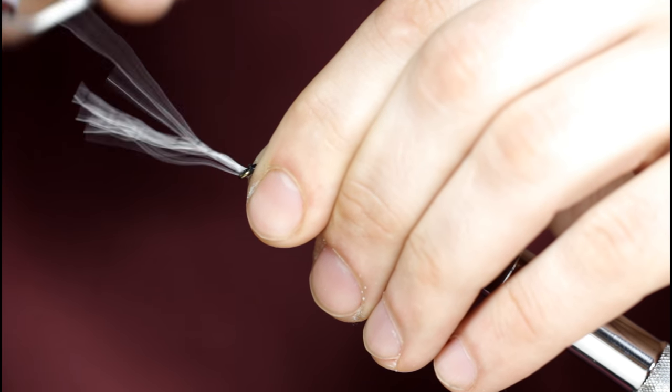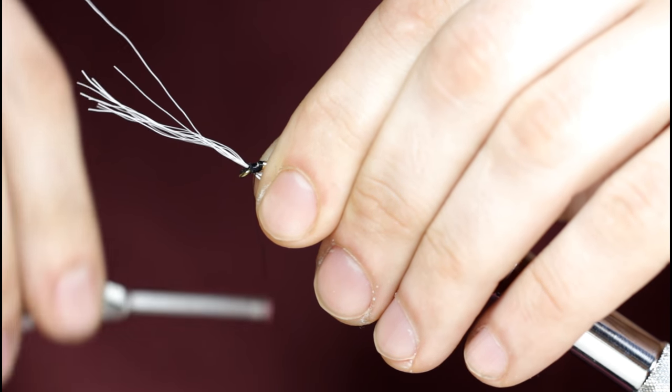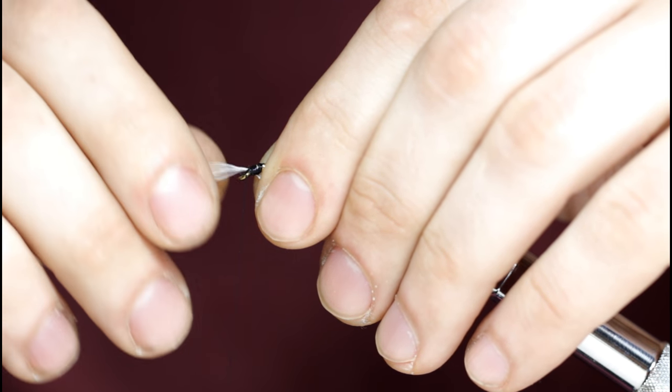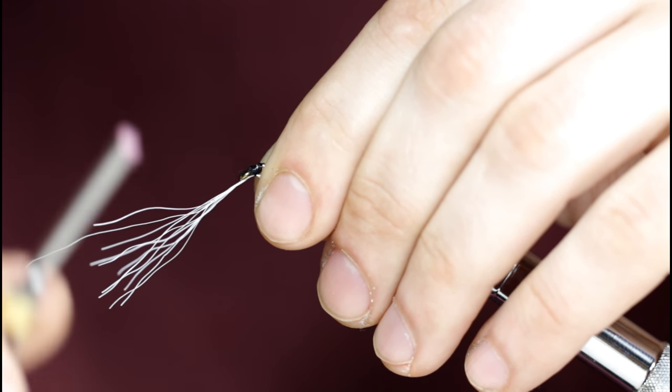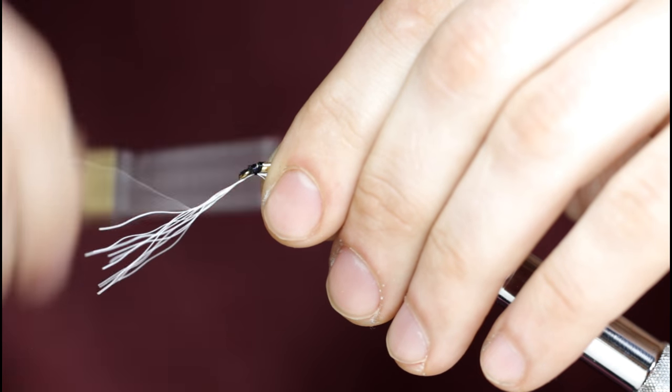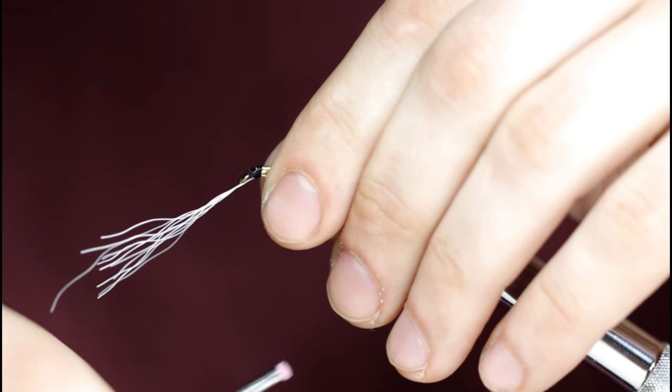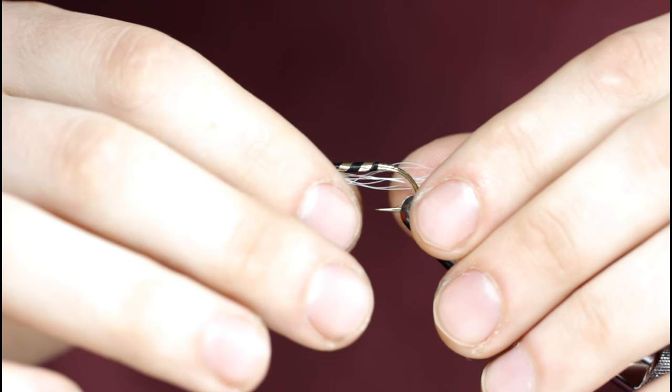Get those out of there and just set this under the hook shank. Take a few turns, a few loose turns here, making sure it's riding underneath the hook eye. I generally like to start at the rear of the head and work my way down towards the hook eye. Everything seems to be bound down pretty decent here.